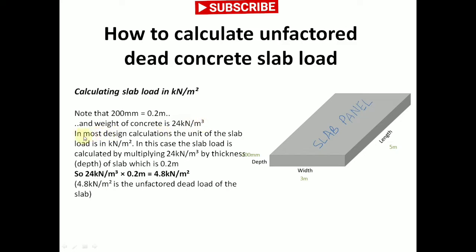In most design calculations, the unit of the slab load is in kN per meter squared. In this case, the slab load is calculated by multiplying 24 kN per meter cubic by thickness, that is the thickness of 200 millimeters, the depth of slab.